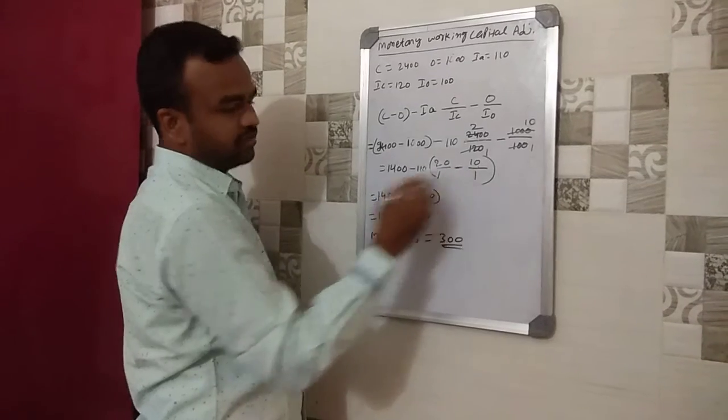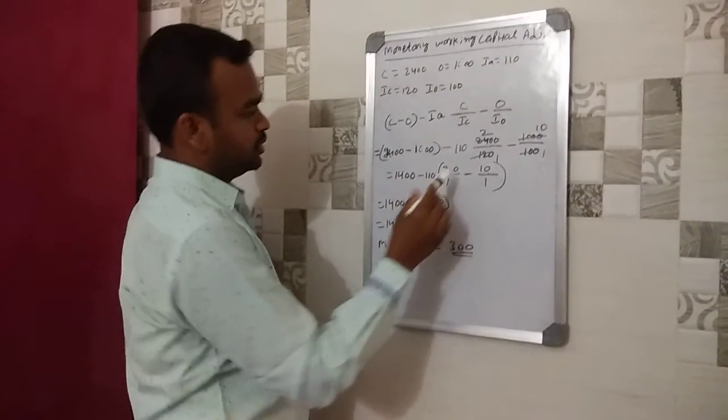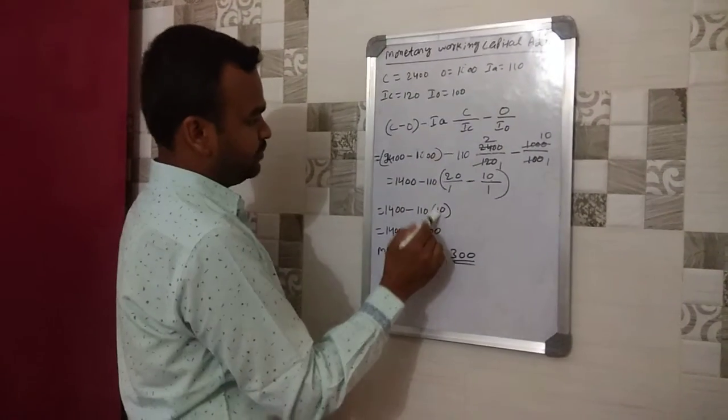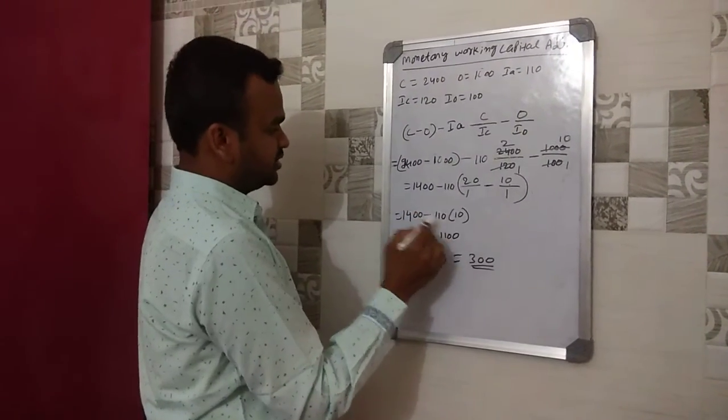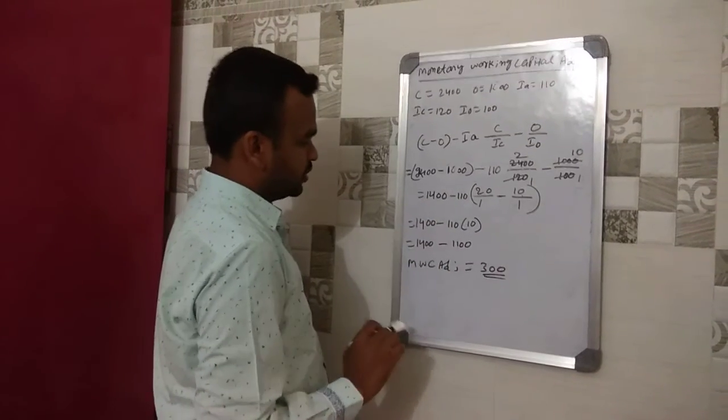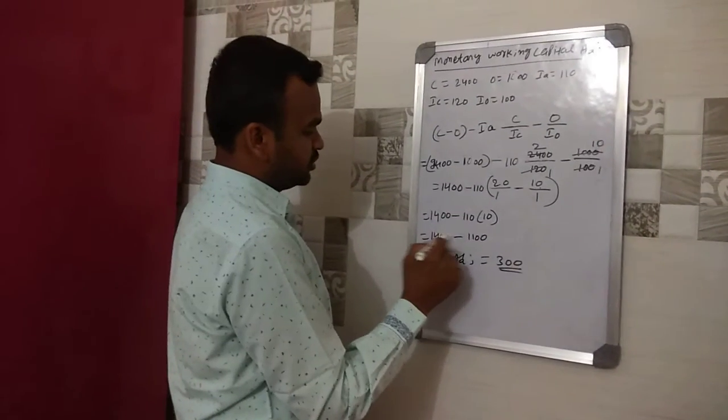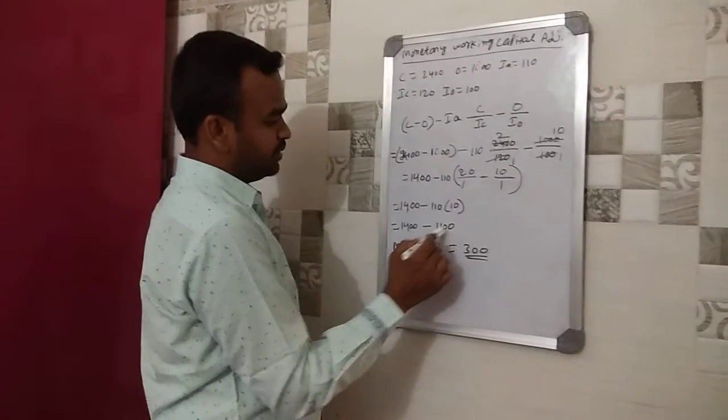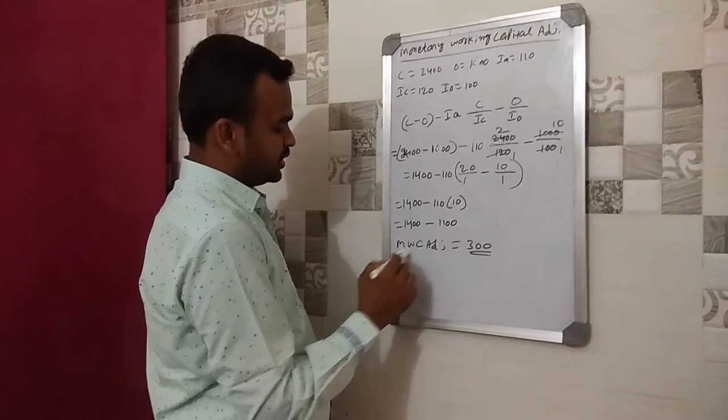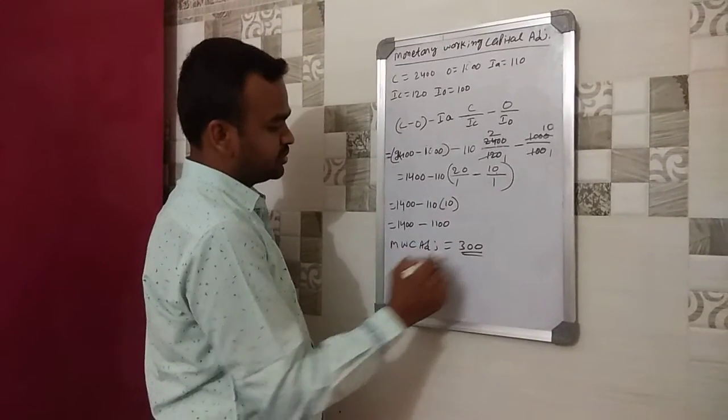Then 1400 minus 110 into 10 gives 1100. So the monetary working capital adjustment amount comes to 300 rupees.